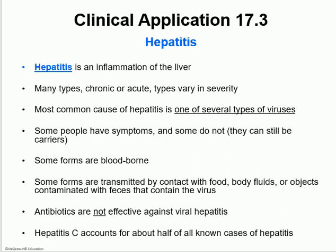Hepatitis can be either acute or chronic. Some of the symptoms to keep in mind are obviously a fever because it's an infection, and a lot of times patients would become jaundiced or become yellow in color — their skin becomes yellow in color. Most of the time they are transmitted by contact through fecal-oral routes. So the virus would be transmitted through the feces and then due to unclean hands, those viruses would be transmitted to food and then eaten by somebody else. Know that antibiotics are not effective against hepatitis because it's a viral infection — antibiotics have no effect on viruses, they can only affect bacteria.